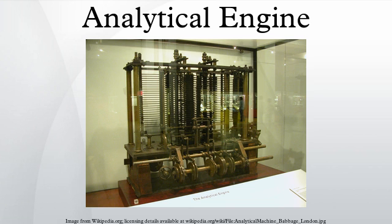There was to be a store capable of holding 1,000 numbers of 40 decimal digits each. An arithmetical unit would be able to perform all four arithmetic operations, plus comparisons and optionally square roots. Initially it was conceived as a difference engine curved back upon itself, in a generally circular layout, with the long store exiting off to one side. Like the central processing unit in a modern computer, the mill would rely upon its own internal procedures, stored in the form of pegs inserted into rotating drums called barrels, to carry out some of the more complex instructions the user's program might specify.